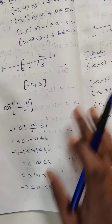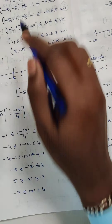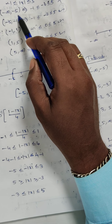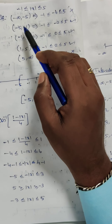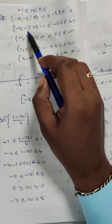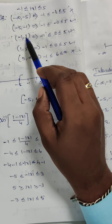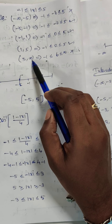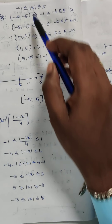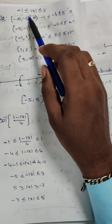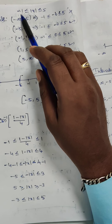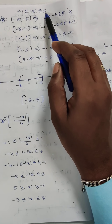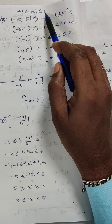The intervals I am going to take are: minus infinity to minus 5, minus 5 to minus 1, minus 1 to 1, 1 to 5, and 5 to infinity. The inequality to satisfy is minus 1 less than or equal to mod of x less than or equal to 5.